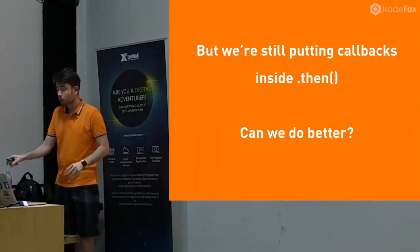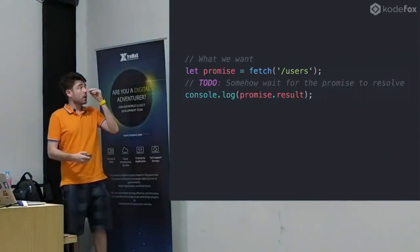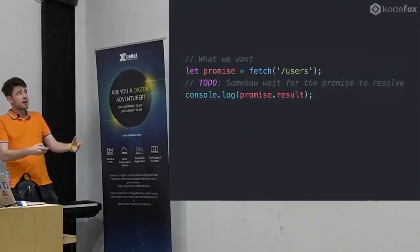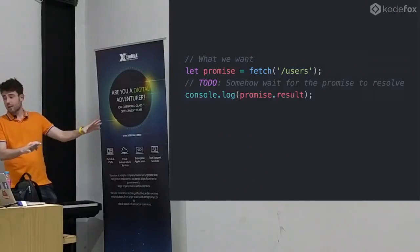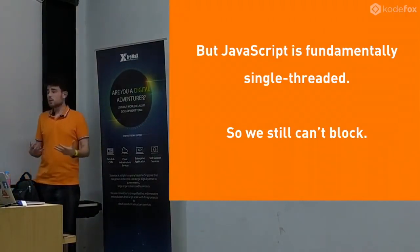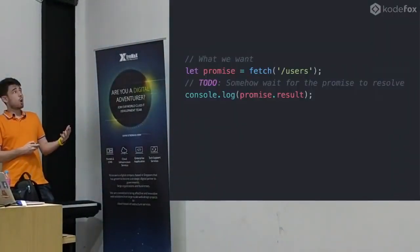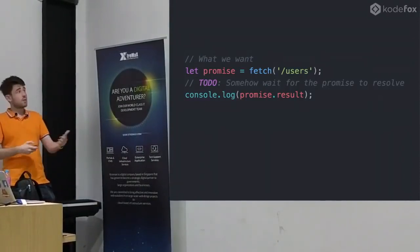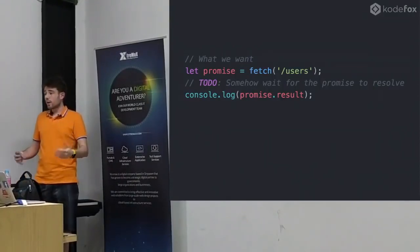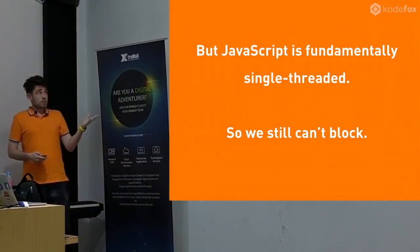So can we do better? We want to just have normal sequential programming like we're used to in other languages. We want to get our promise, somehow wait for the promise to finish, and then just log the result - with no then anywhere. The problem is JavaScript is fundamentally single-threaded. So we can't block. We can't just pause the program here, wait for the promise to finish, and then resume, because we don't want to block our entire thread. That's the same problem as when you use alert - the whole software is just not doing anything useful.